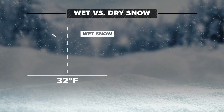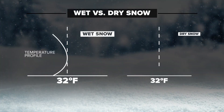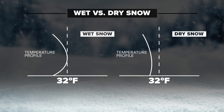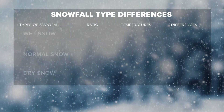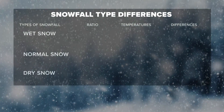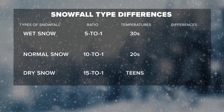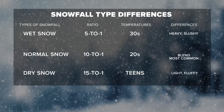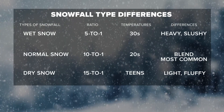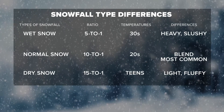With wet snow, temperatures aloft are near or just above freezing as snow falls to the surface, and dry snow stays below freezing as much colder air aloft as it falls to the ground. Wet snow is the heaviest — it has a low snow-to-liquid ratio as low as five to one, meaning for every five inches of snow there's one inch of liquid equivalent.